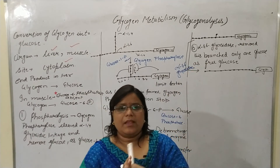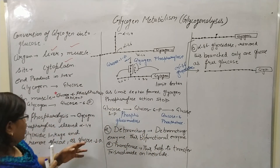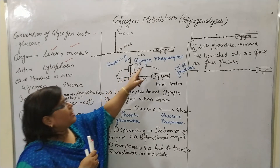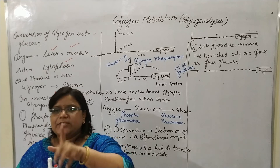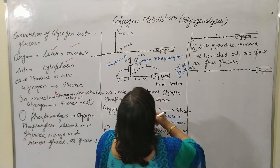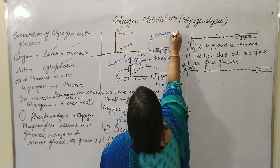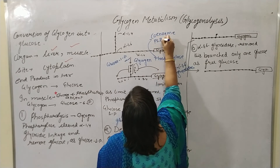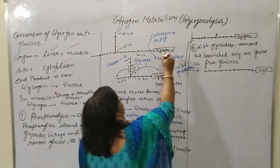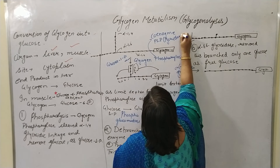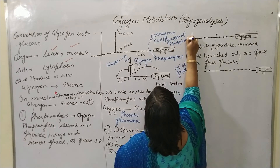An important point I should mention: for the action of glycogen phosphorylase, a coenzyme is required — that is PLP, pyridoxal phosphate. So glycogen phosphorylase requires pyridoxal phosphate as its coenzyme.